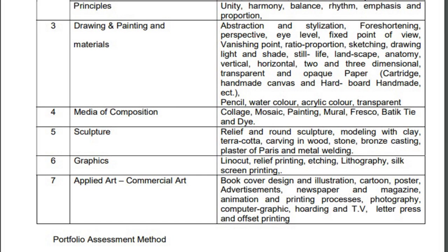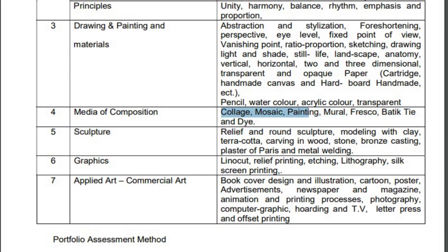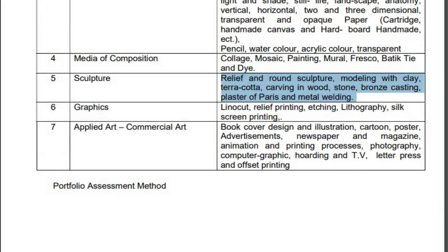If you choose media and composition, you have collage, mosaic, painting, mural, fresco, and batik. For sculpture, there are different kinds such as relief and round sculpture, modeling, clay, terracotta, and carving. The materials and processes for sculpture are different from painting.